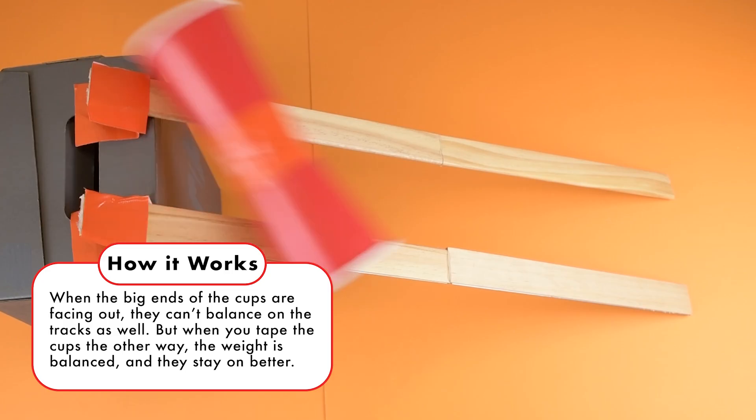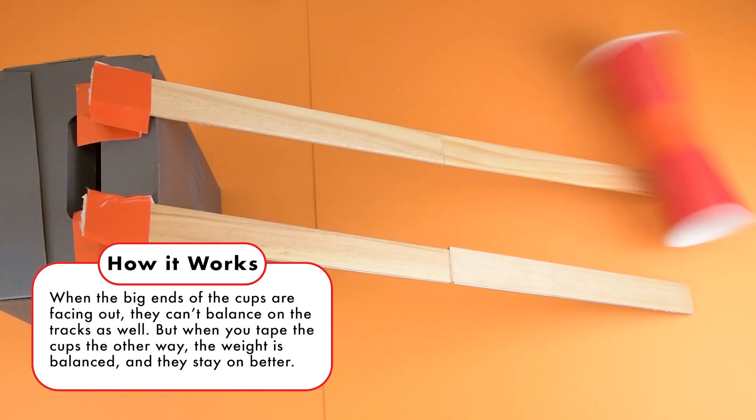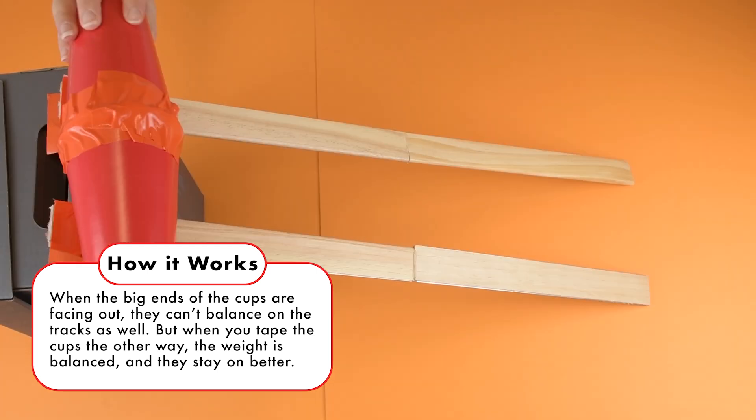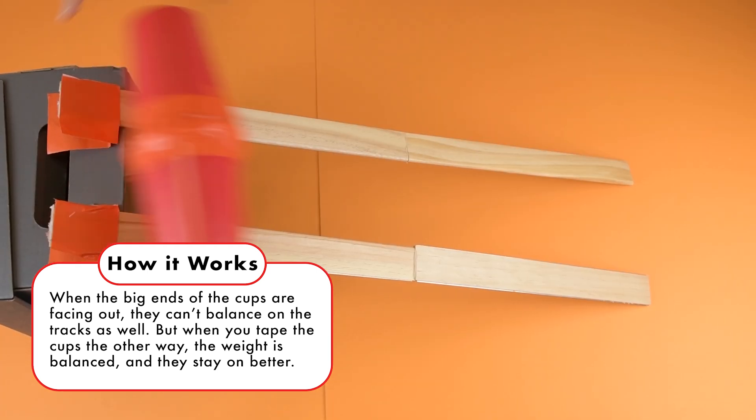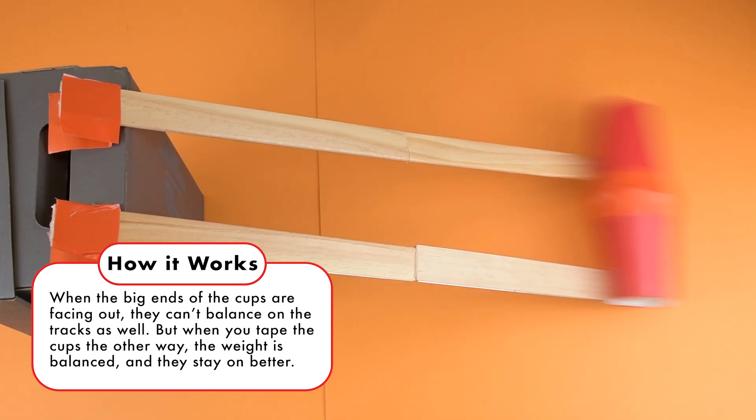How it works. When the big ends of the cups are facing out, they can't balance on the tracks as well. But when you tape the cups the other way, the weight is balanced and they stay on better.